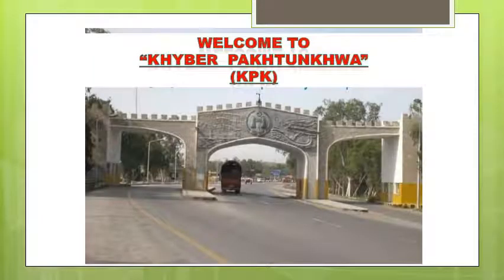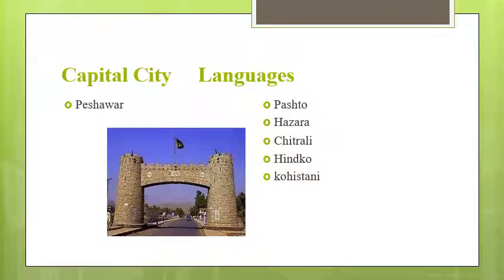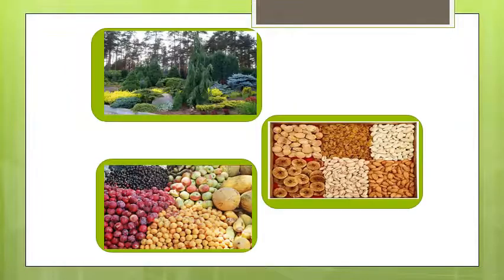Finally, we will discuss the province of Khyber Pakhtunkhwa. It is the third most populated province of Pakistan. Peshawar is its capital city. The people speak many different languages including Pashto, Hazara, Chitrali, Hindko, and Kohistani. It has dense alpine and coniferous forests. Fruits such as apples and apricots, and nuts and seeds such as almonds, walnuts, and pine nuts grow here.